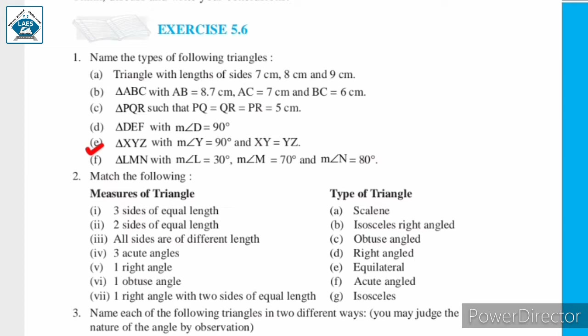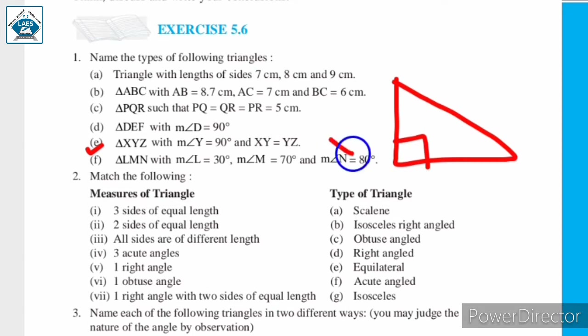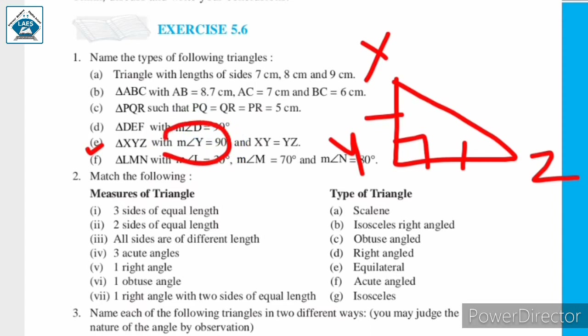Next, triangle XYZ with measure of angle Y equal to 90 degrees and XY equal to YZ. Here, angle Y is 90 degrees and XY equals YZ. This triangle satisfies two properties: first, it is a right angled triangle because one angle is 90 degrees; also, this triangle is an isosceles triangle.